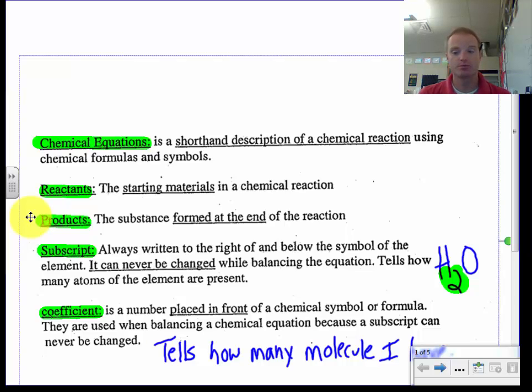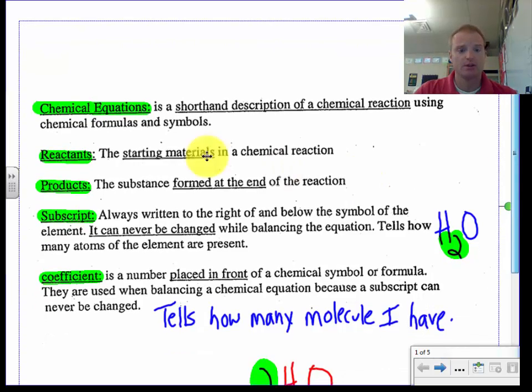So when we're writing or reading a chemical formula, there's different parts. We've got a subscript. And a subscript is always written to the right and below the symbol of the element. It can never be changed. I cannot change this two over here for H2O. If I change that I have something totally different. So it tells how many atoms of the element are present. For hydrogen it tells me I have two hydrogen atoms.